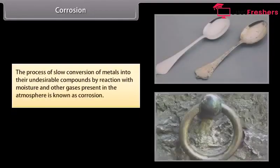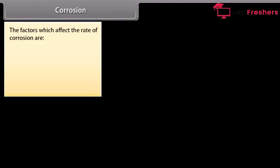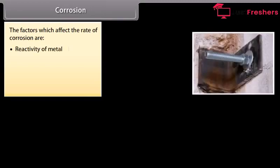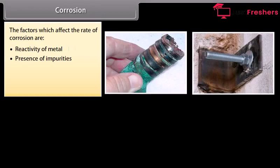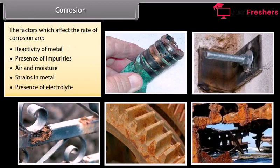Corrosion. The process of slow conversion of metals into their undesirable compounds by reaction with moisture and other gases present in the atmosphere is known as corrosion. For example, silver gets tarnished, iron rusts, copper develops green coating on its surface, and lead loses its luster. The factors which affect the rate of corrosion are reactivity of metal, presence of impurities, air and moisture, strains in metal, and presence of electrolyte.